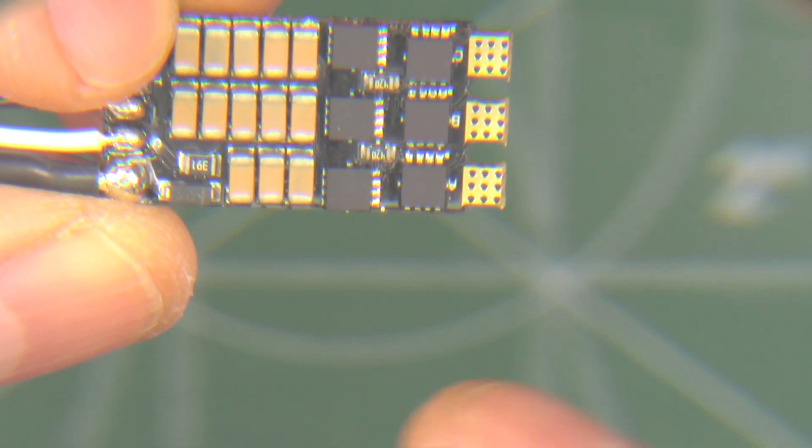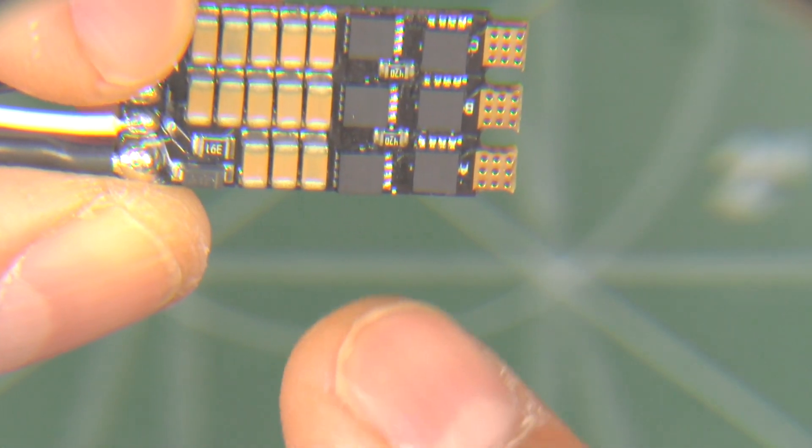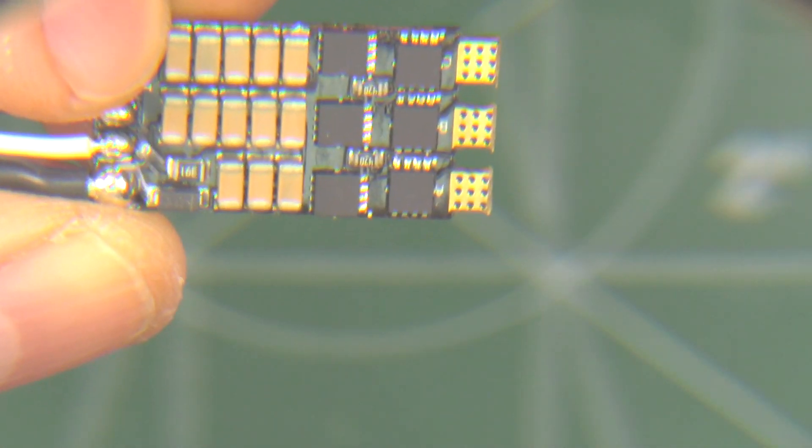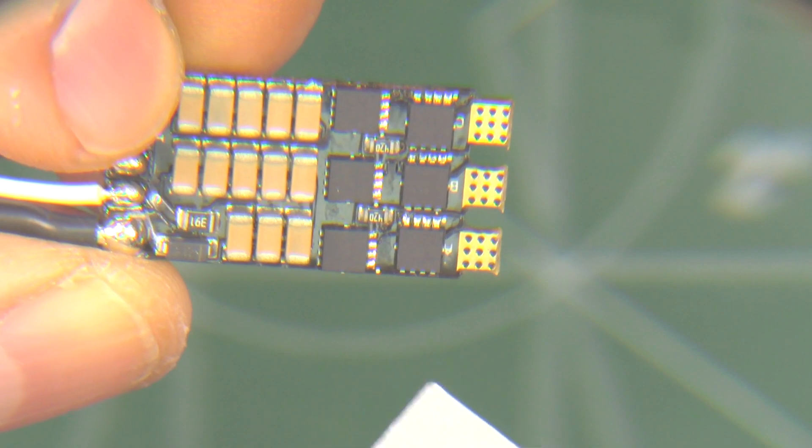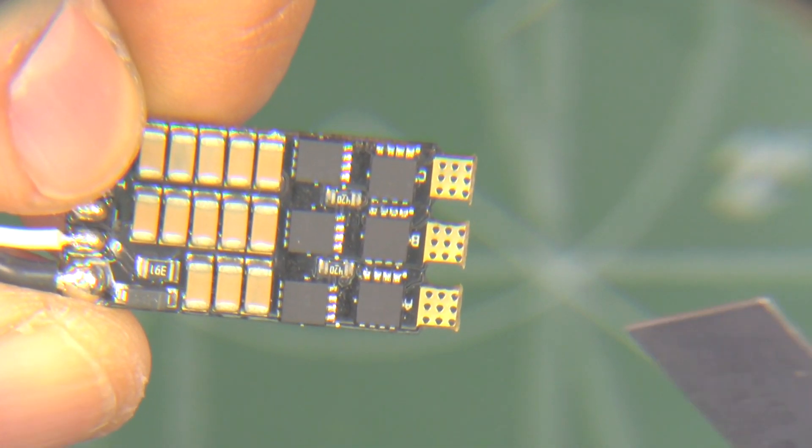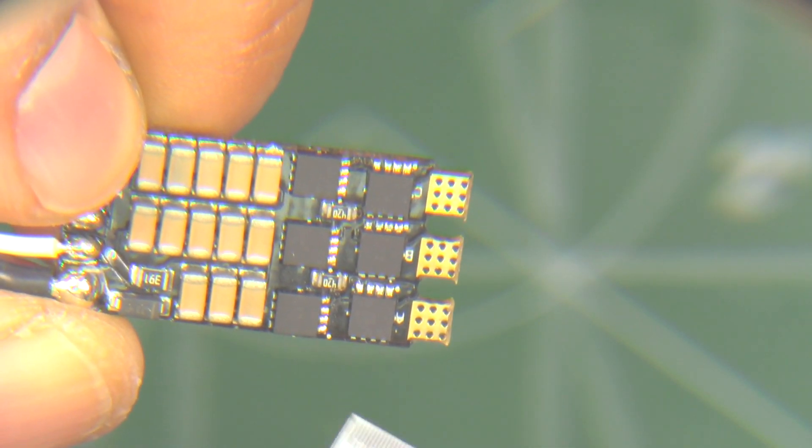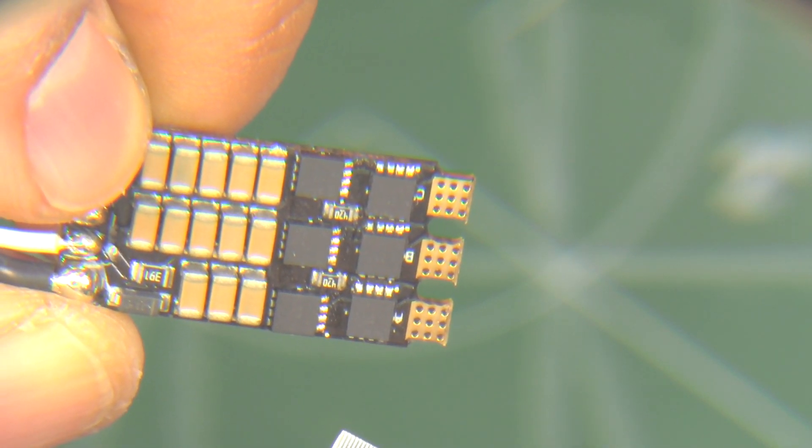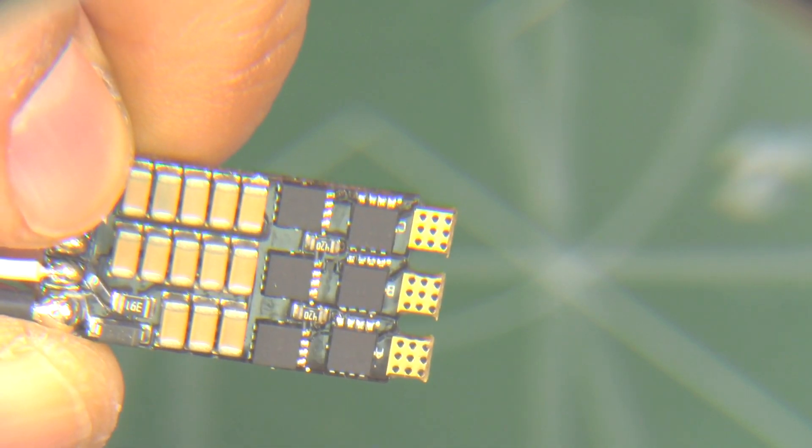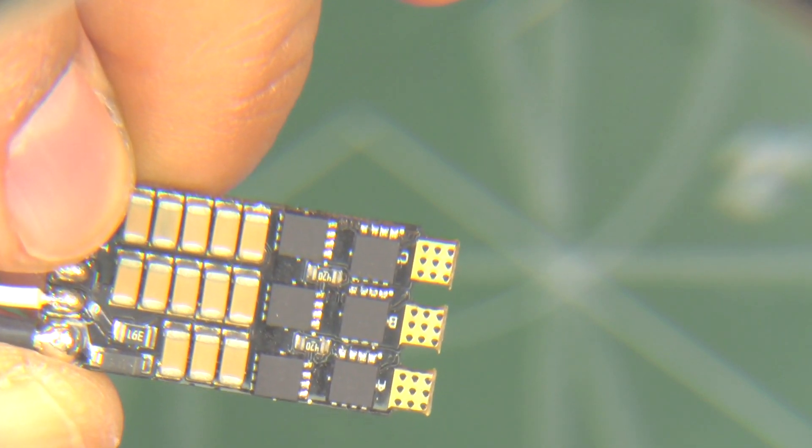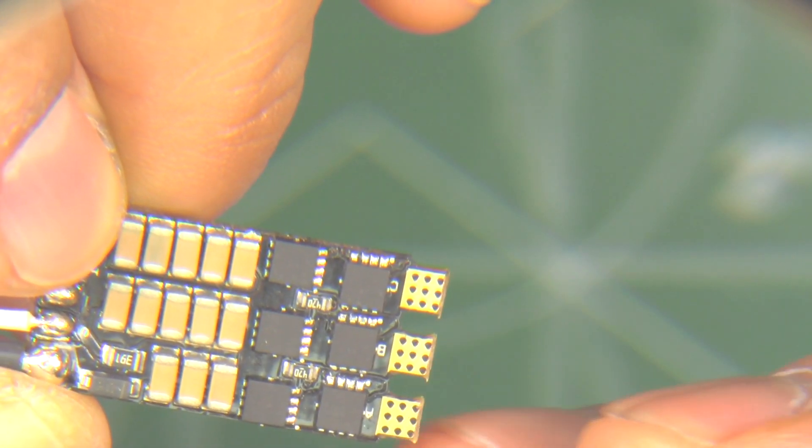Alright, so here's the ESC up close. I removed the shrink wrap and the heat sink. As you can see, the FETs are extremely tiny. I couldn't tell the manufacturer because the markings are there but they're not visible at all. I looked at them under the magnifying glass as much as I could and I just couldn't tell. They kind of look like those Toshiba FETs that have been used lately in a lot of these mini ESCs. I don't have that much data on them as far as durability.